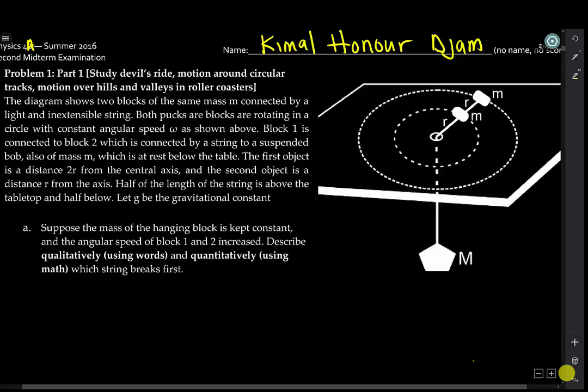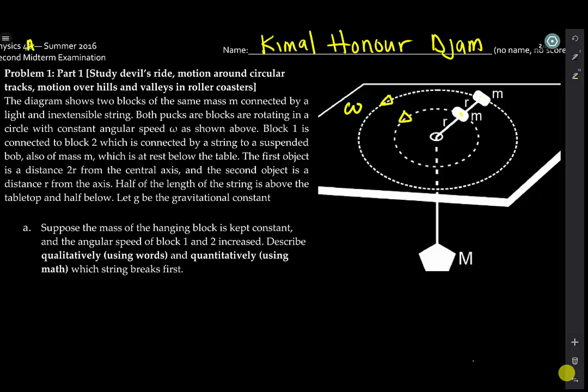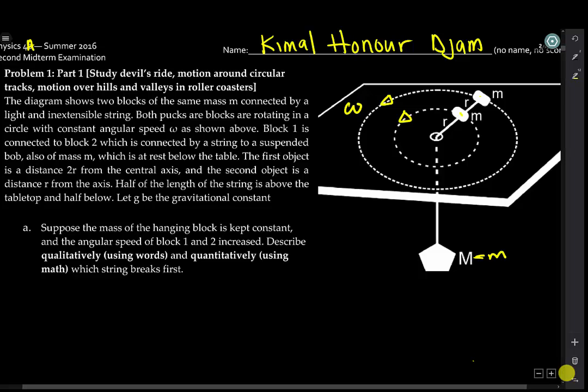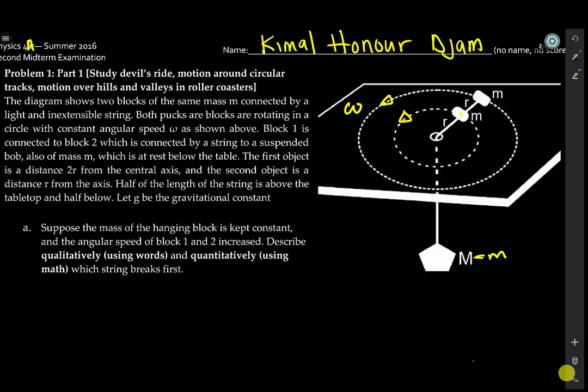We have two masses, one and two, that are moving around in a circle with the same angular velocity omega. So the question says, suppose the mass of the hanging block is kept constant and the angular speed of block one and two increased. Describe qualitatively, that is using words, and quantitatively, that is using math, which of the string breaks first?